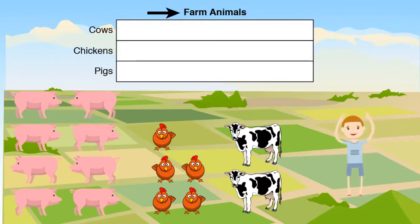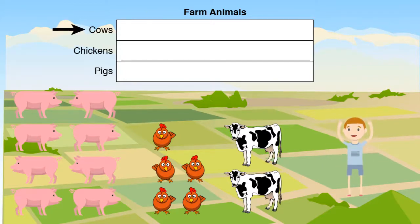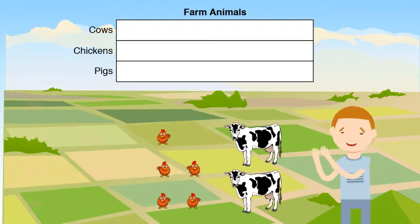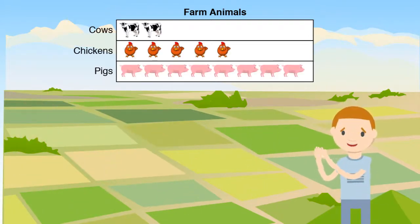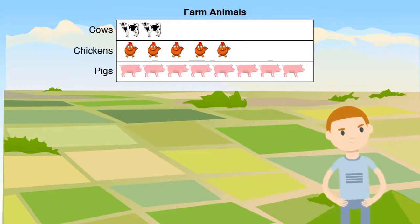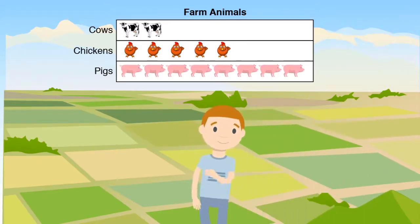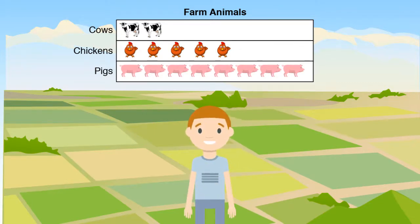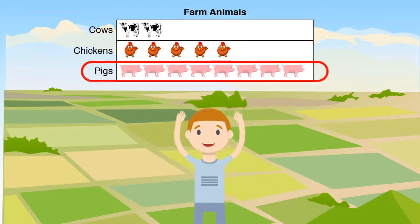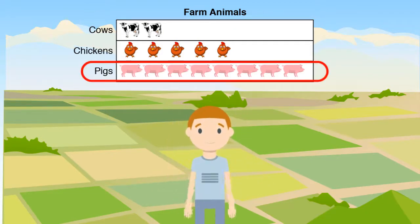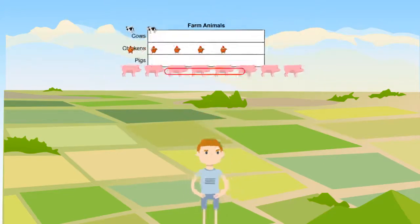This picture graph has a title. We are going to make a picture graph of farm animals. On the side are the categories for our data: we have cows, chickens, and pigs. Our last step is to draw a picture showing each animal. Looking at this graph, my friend has the most pigs — she has more pigs than chickens and cows, as shown on the picture graph.